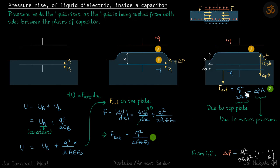Since u_B is a linear function of x, differentiating gives f_external = du/dx = q²/(2Aεε₀). Equating this to our earlier expression and solving, we get the excess pressure: delta_p = q²/(2ε₀A²) · (1 − 1/ε). Notably, this is independent of x, meaning everywhere between the plates the pressure increases by this same amount regardless of the initial liquid level.